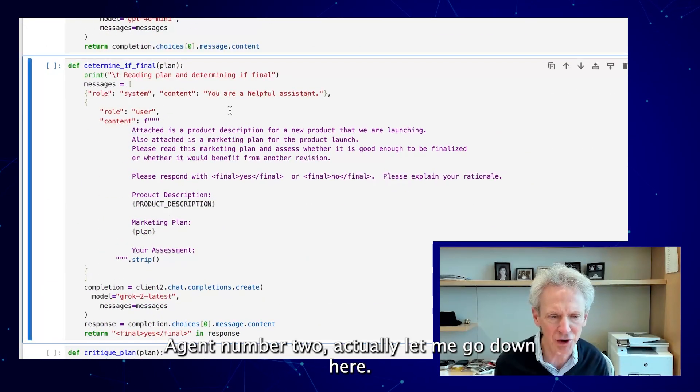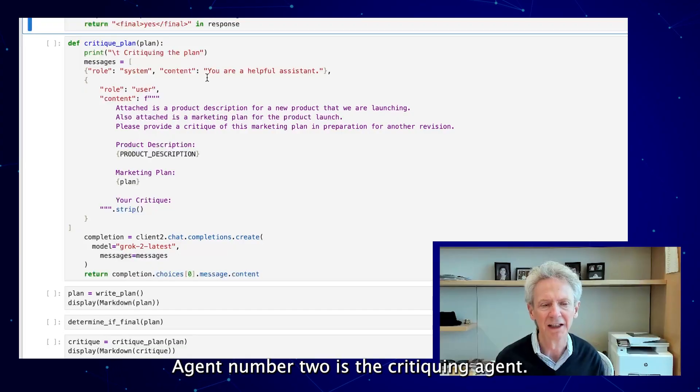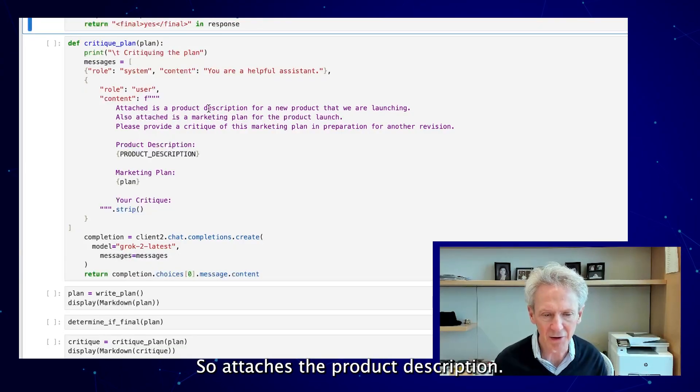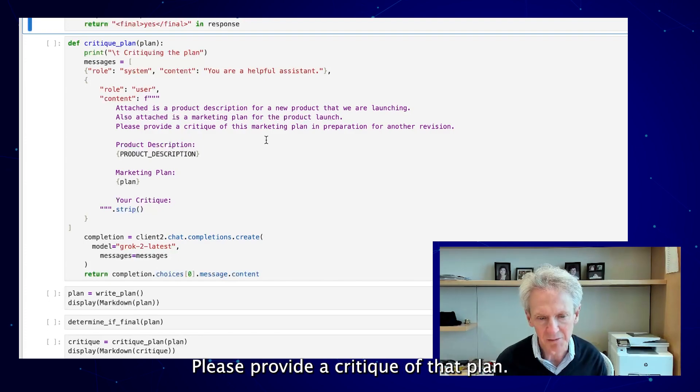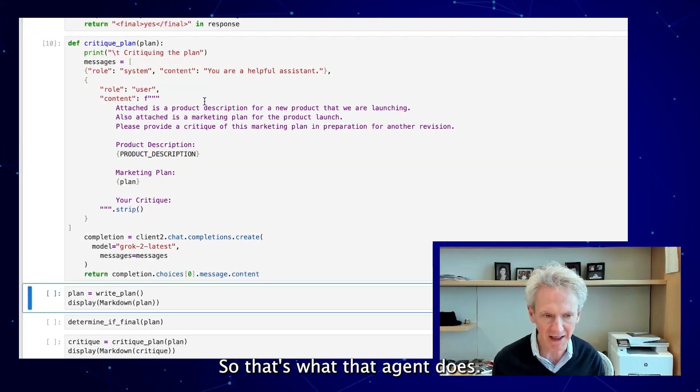Agent number two is the critiquing agent. So attached is the product description, attached is the marketing plan. Please provide a critique of that plan. So that's what that agent does.